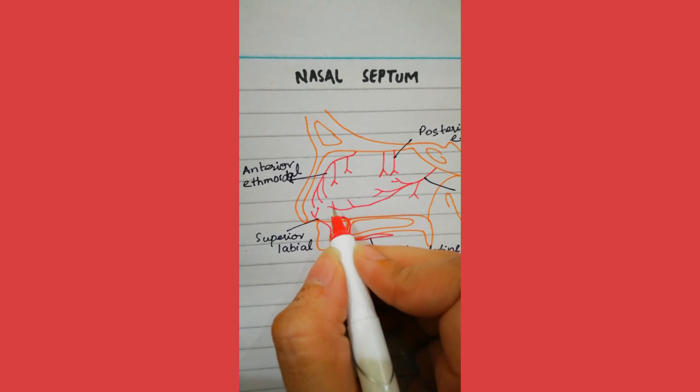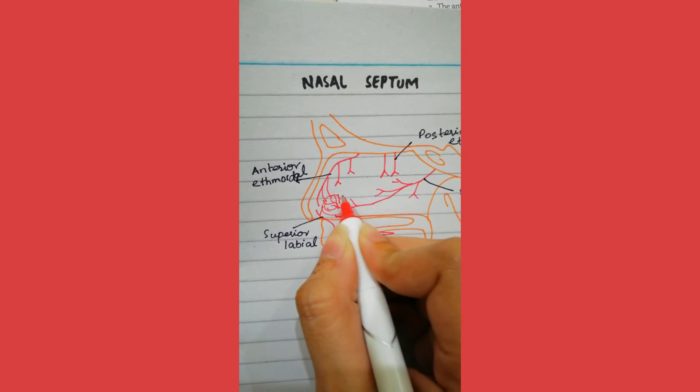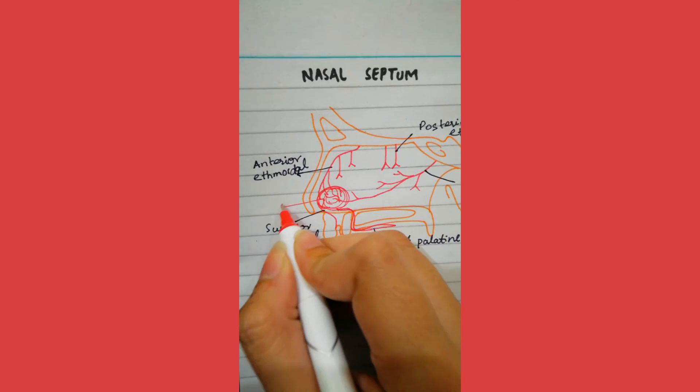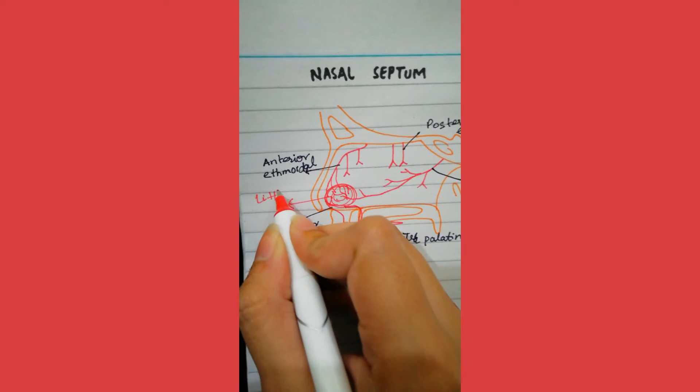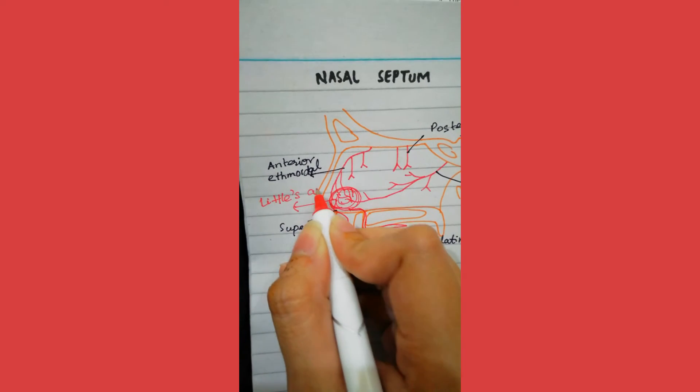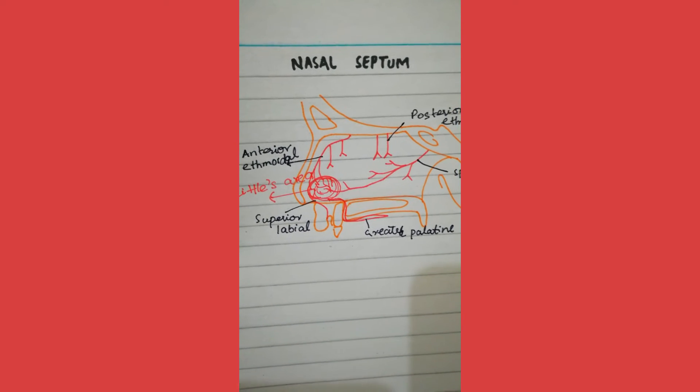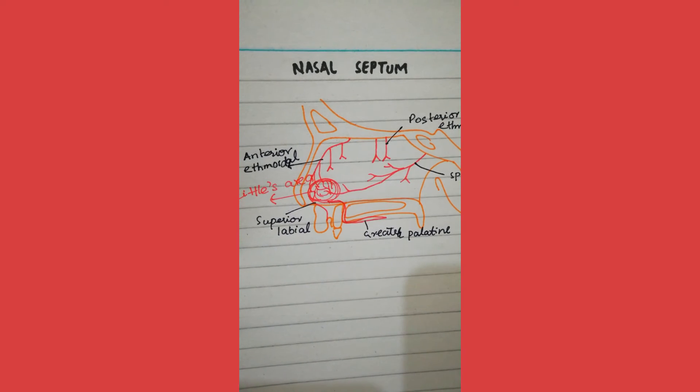Coming to the most important part, the anterior inferior part of the vestibule of the septum, they anastomose and form capillaries, which we'll talk about: Little's area. Whenever there is bleeding from the nose, or epistaxis, this area is known as Little's area or Kiesselbach's plexus.